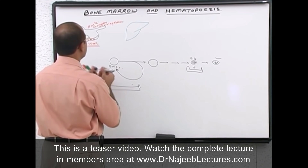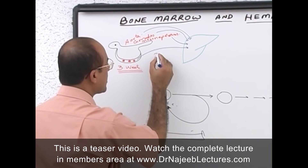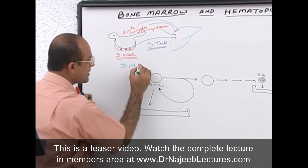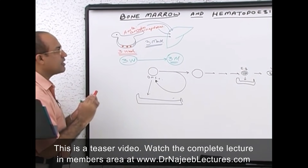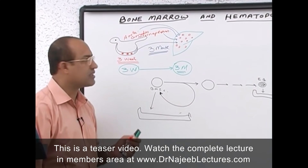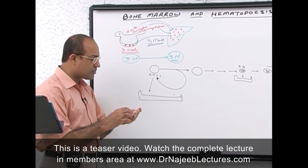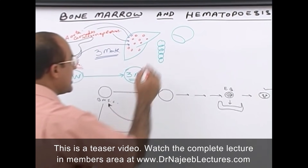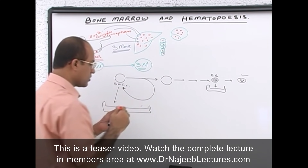These stem cells eventually transfer to the liver of the fetus around the third month. It's easy to remember: yolk sac at 3 weeks, liver at 3 months. The liver then becomes the major organ for hematopoiesis. Even though dominant hematopoiesis is going on in the liver, some hematopoiesis is also going on in the spleen and lymph nodes as well.